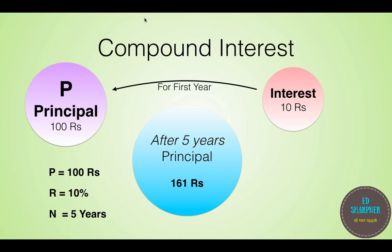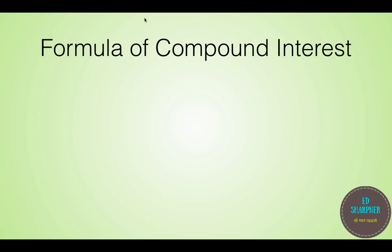Now what is the formula for the amount accumulated after the compound interest cycle for the same principle of 100 rupees? For the first year, we get 100 plus 100 into R by 100, which is nothing but the amount after one year.